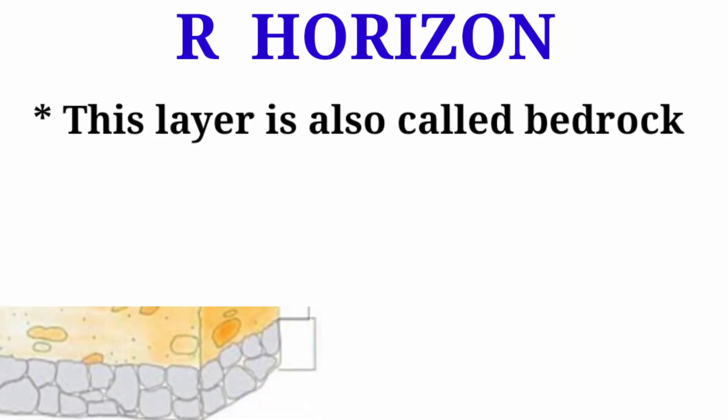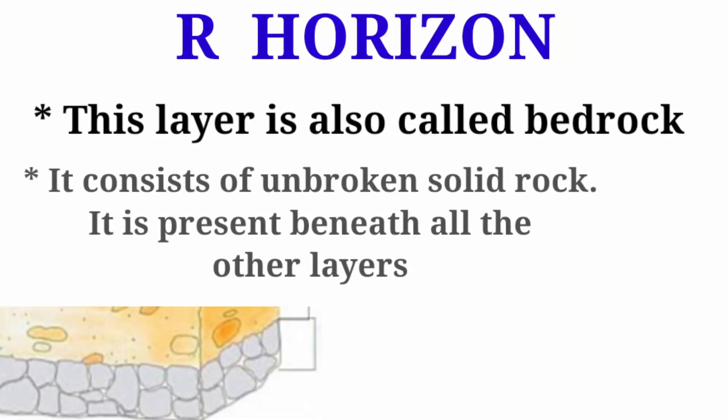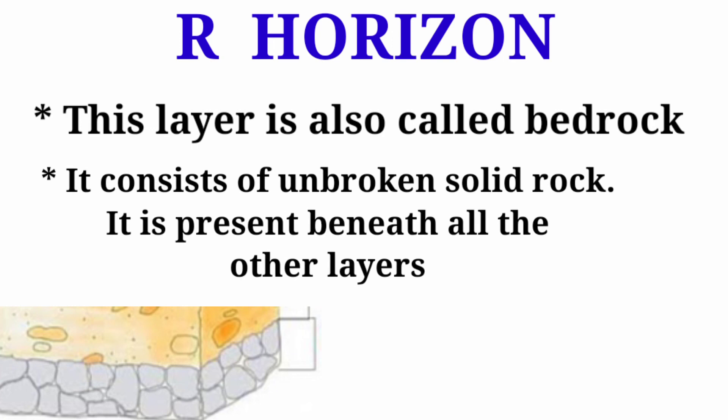R-Horizon: This layer is also called bedrock. It consists of unbroken solid rock and is present beneath all the other layers.